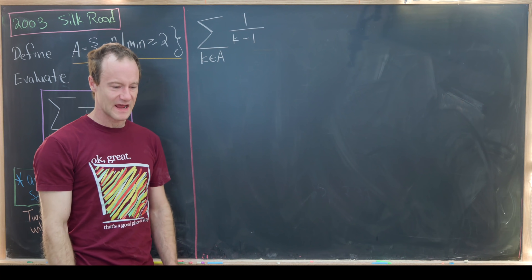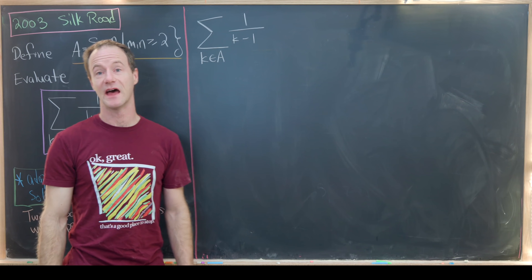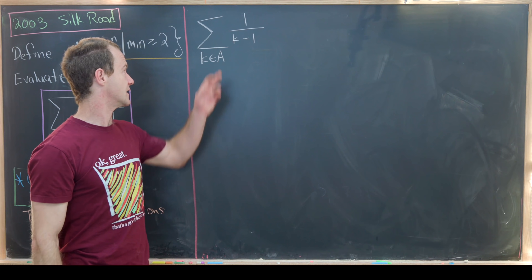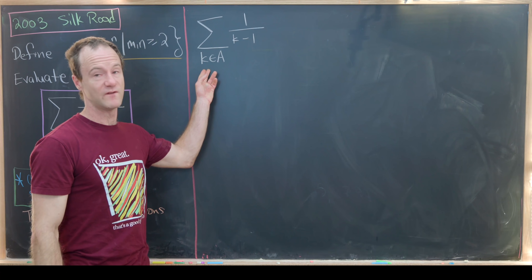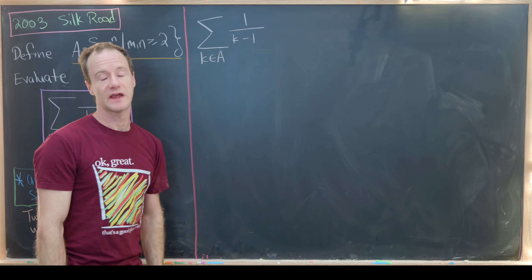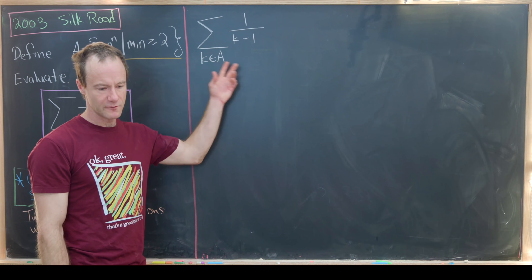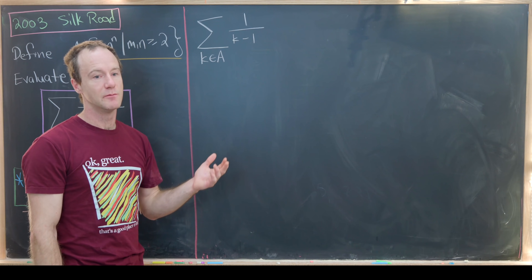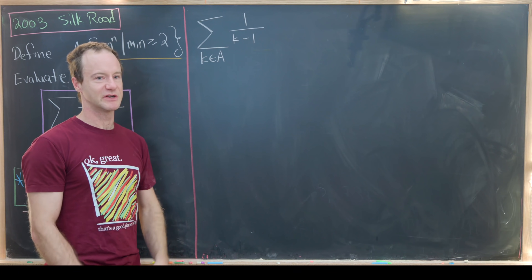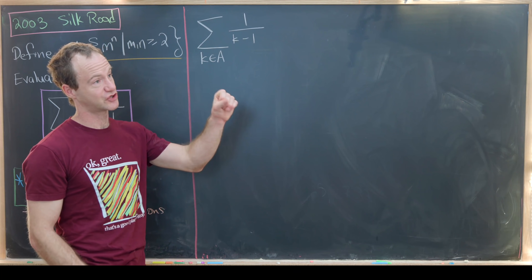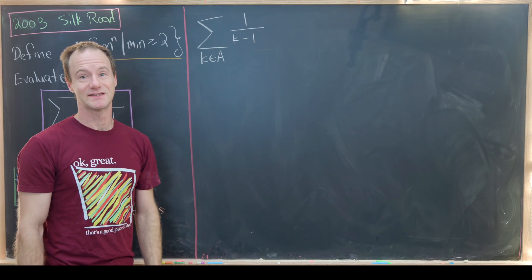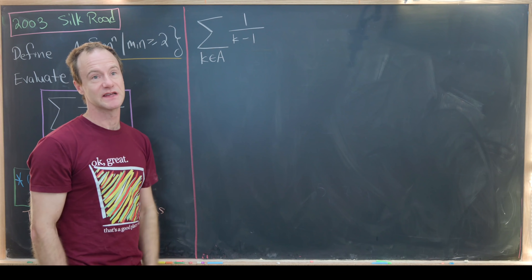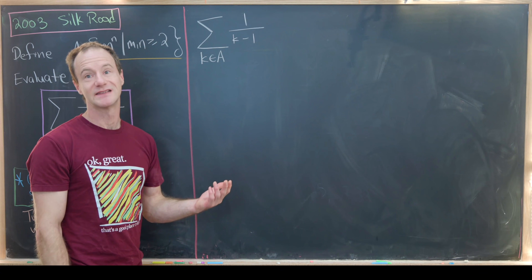Hopefully that exploration gave you a nice intuition for what the elements from A look like. Now we're ready to look at a solution. I've written my goal sum right here: the sum over all values k from A of 1 over k minus 1. This 1 over k minus 1 almost looks like the sum of a geometric series, but not quite.